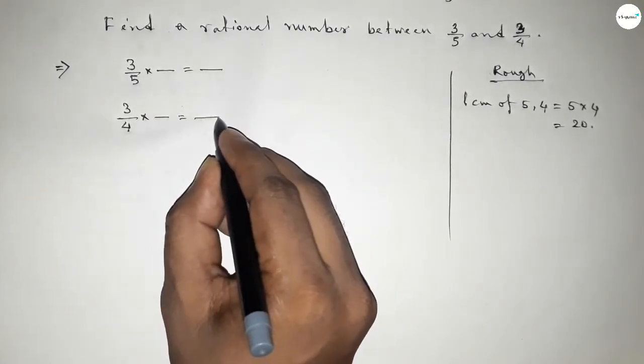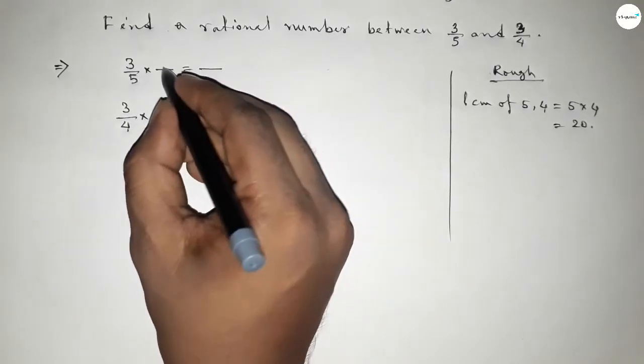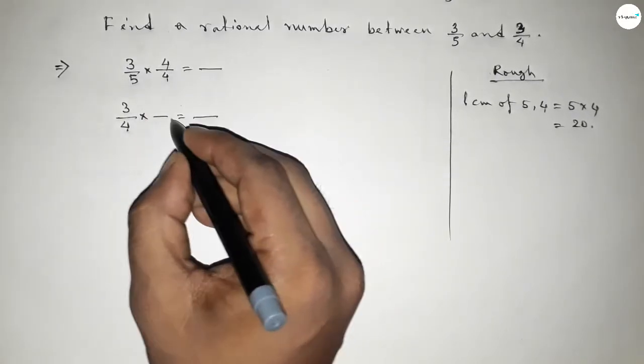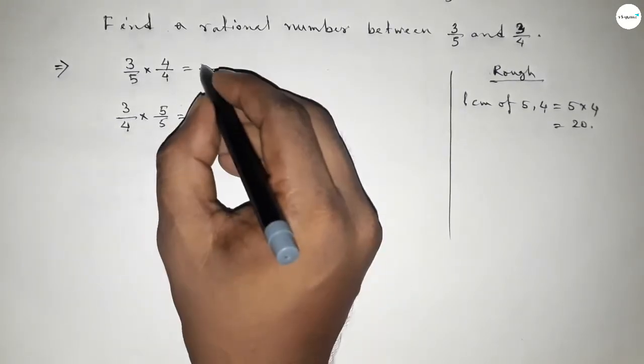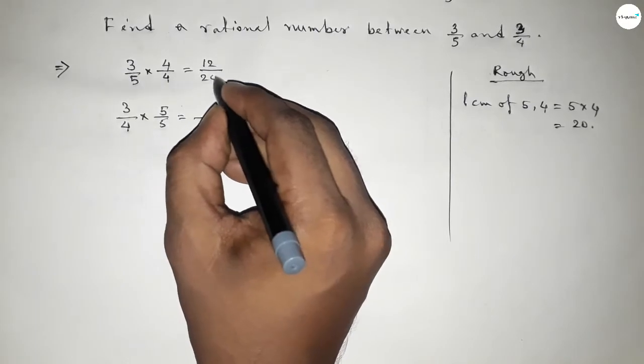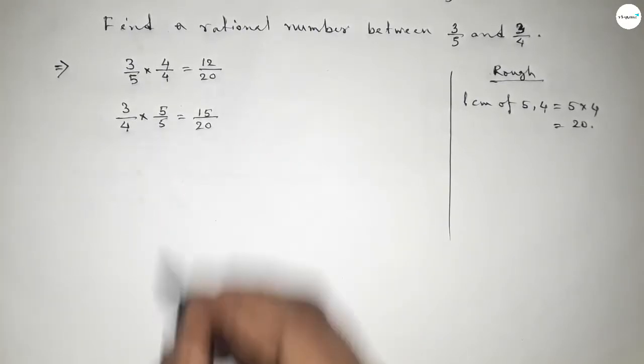So we should bring the denominator of both to 20. So what should be multiplying here to get the denominator both 20? If you put here up and down 4 and here 5, then we can get denominator of both 20. So this is 12 over 20 and this is 15 over 20.